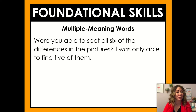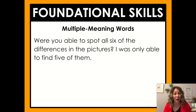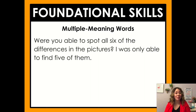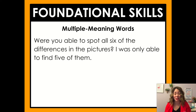Here are a couple more example sentences: 'Were you able to spot all six of the differences in the pictures? I was only able to find five of them.' The multiple meaning word here is 'spot.' I can use context to know that spot and find mean about the same thing — 'Were you able to spot them? Were you able to find them?' That's about the same.